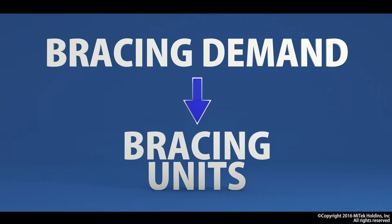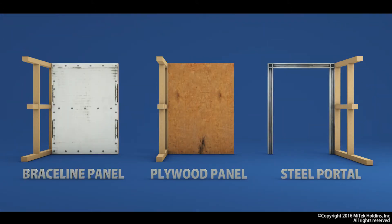For simplicity of design, the bracing demand is converted to what we call bracing units. These bracing units are typically resisted by braced panels. That could be in the form of a braceline panel, a plywood panel, or in cases of larger loads, we even use steel portals.